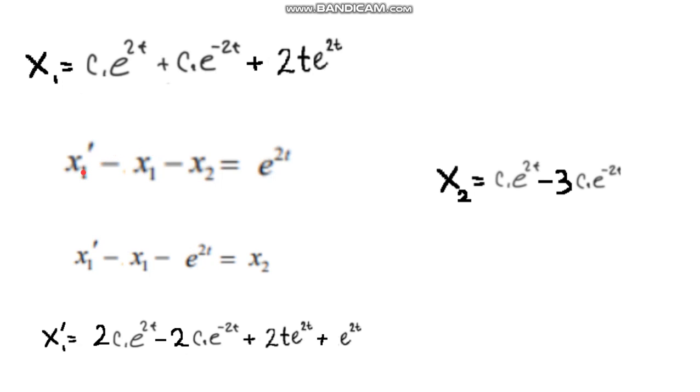And x1 prime, we could find that out by taking the derivative. And then x2 is what we don't know. So we want to solve for this. We put it on the other side. So we have this is all equal to x2. Now, we just plug everything in.